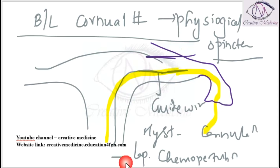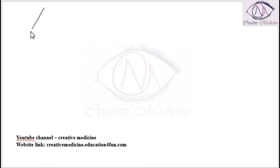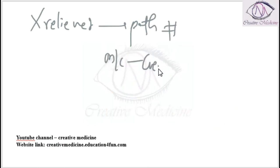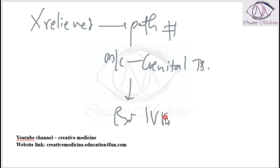Most of the time the block is relieved by passing the thin guide wire under hysteroscopic guidance. If it is not relieved, then it definitely means it is a pathological block. The most common cause of pathological cornual block is genital tuberculosis, and the best treatment in such a case is in vitro fertilization.